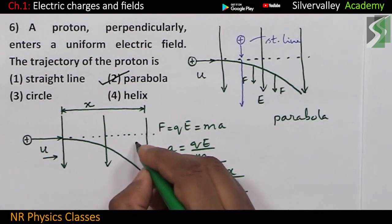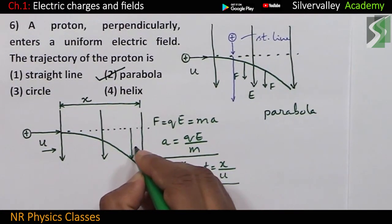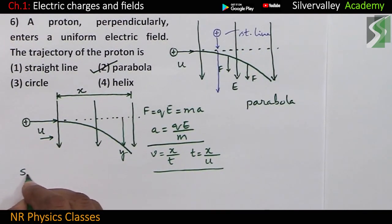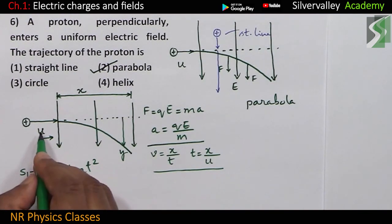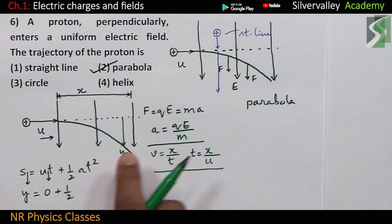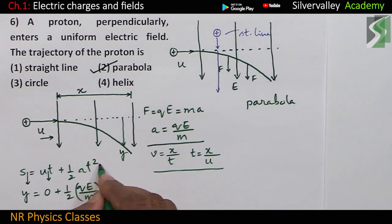Now, I want this displacement. This displacement is along y axis. So, let me denote it by y. Now, S equal to U t plus half A t square becomes this is displacement in this direction which is denoted by y. Initial velocity in this direction is 0 because velocity is along the horizontal plus half acceleration is QE by M, QE by M into t square. T square is x square by U square, x square by U square. Observe.